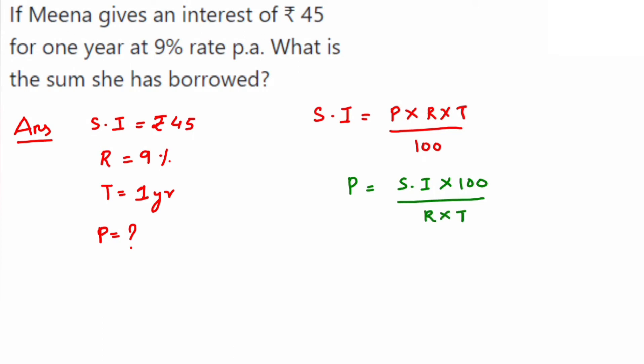We can use any formula, we'll get the answer. I'm using the second one. When we substitute here, simple interest 45 multiplied by 100 upon rate 9 multiplied by time 1 year. Now we can cancel 45 and 9. This is 9 ones are 9, and 9 fives are 45. So in the numerator we have 5 and 100. When we multiply it, 5 into 100 we'll get 500. So from here we'll get principal is equal to rupees 500.